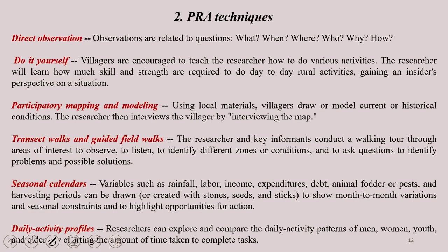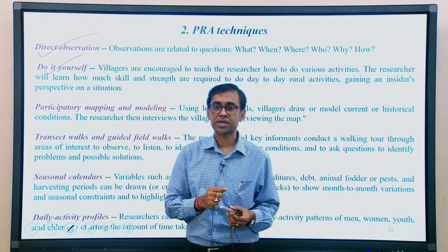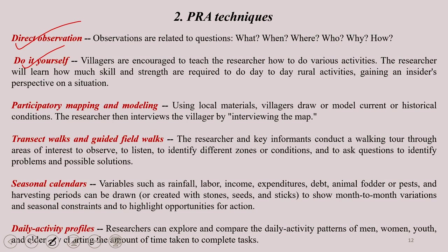PRA techniques useful at the field level include direct observation — what you see, when, where, who, why, and how. These basic observations directly feed into PRA exercise outcomes. Another technique is 'do it yourself' — participants and communities should be encouraged to teach the researcher how to do various activities. Researchers learn how much skill and strength are required for day-to-day rural activities, gaining an insider perspective on real situations.